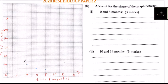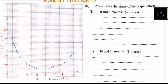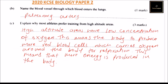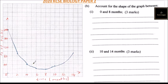Now join all the plotted points to form the graph. The curve will not be perfectly smooth, but you should get something similar to what is shown. Drawing the graph this way should earn you the full six marks.